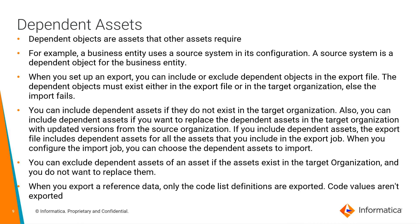Before moving on to the demo, let's talk about dependent assets. By definition, dependent assets or objects are assets that other assets require. For example, if I have a custom business entity in my org and I am importing data into it through a custom source I've created, that custom source becomes a dependent object when I want to promote my custom asset to the target org. The rule is that either the custom source should already be present in the target org, or when exporting the custom asset, I should select the dependent objects and include the source in that export, so it gets imported along with it.